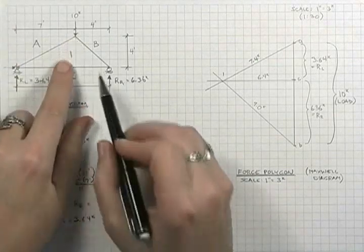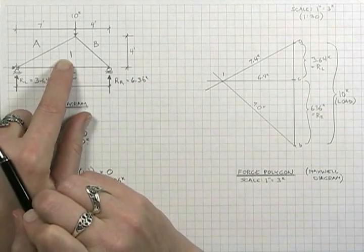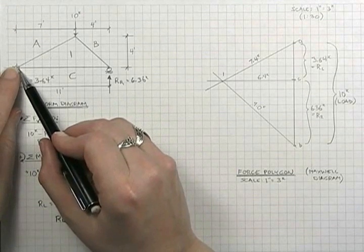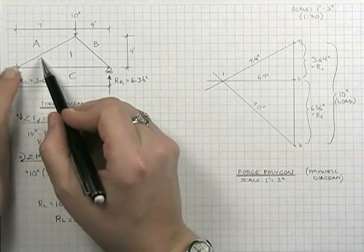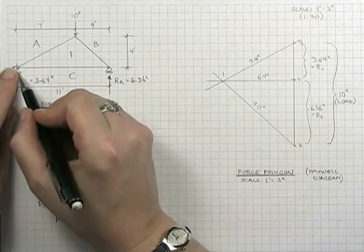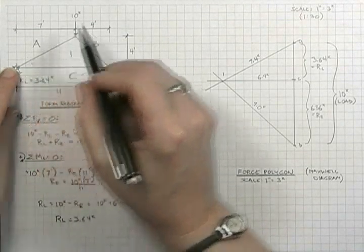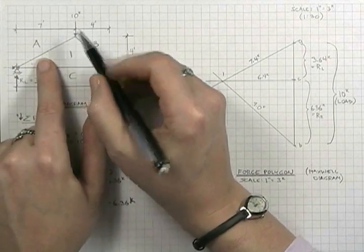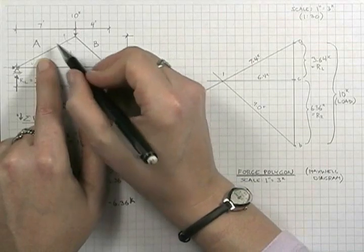That's very important because when we come to reading the sense of the members framing into that joint, we use the same type of designation for the member names. In other words, member A1 at the lower left-hand end is called A1 because when we read the joint name, the A comes before the 1 when we go across the joint. However, when we look at the upper joint at the very top, that same member is now called 1A because in a clockwise reading of the joint name, 1 comes before A.